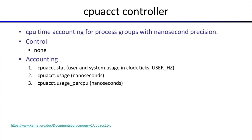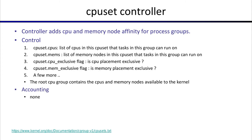The cpuset controller adds CPU and memory node affinity for process groups. Memory nodes are NUMA nodes — typically one socket with multiple cores forms one memory node. Using cpuset.cpus you put the list of CPUs you want your process to run on. cpuset.mems defines the memory nodes (sockets). cpuset.cpu_exclusive can set exclusive placement so nobody else runs on that CPU. Similarly, mem_exclusive exists for memory nodes.